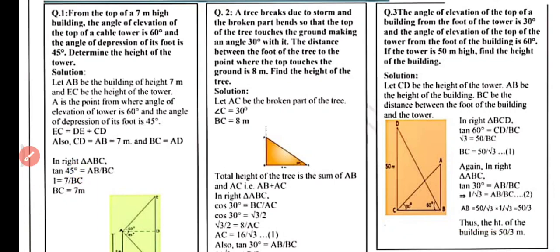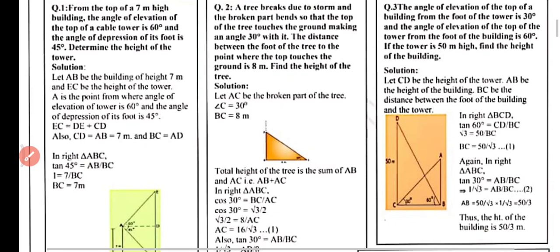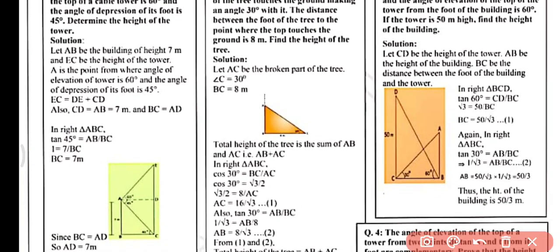As you can see on the screen, we have a 7-meter high building AB and tower CE. Let AB be the building of height 7 meters. EC is the height of the tower. A is the point from where the angle of elevation of the top of the tower — angle DAE — equals 60°.